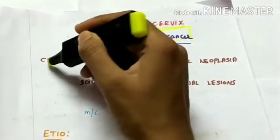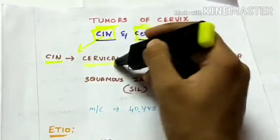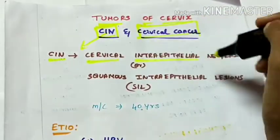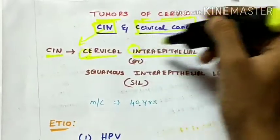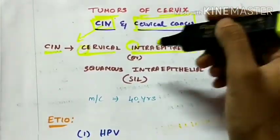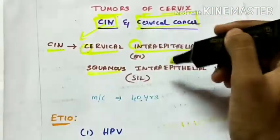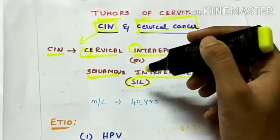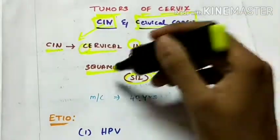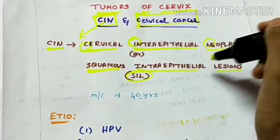CIN stands for cervical intraepithelial neoplasia. CIN is also called squamous intraepithelial lesions, SIL. This CIN is also called as SIL, squamous intraepithelial lesions.